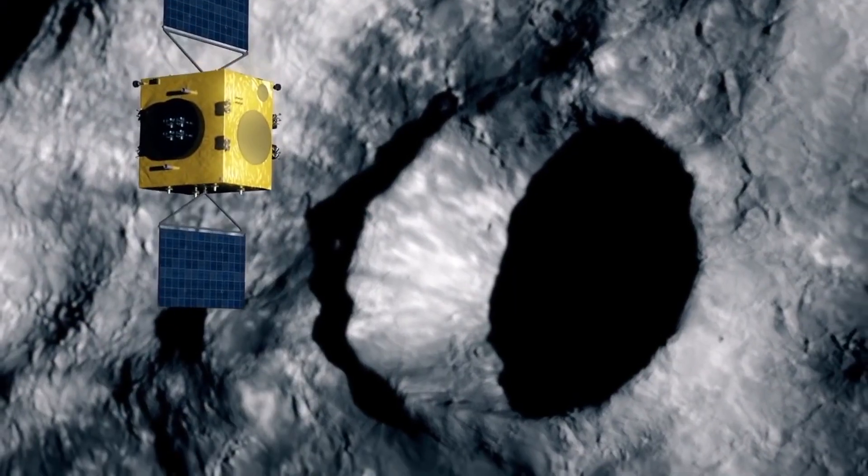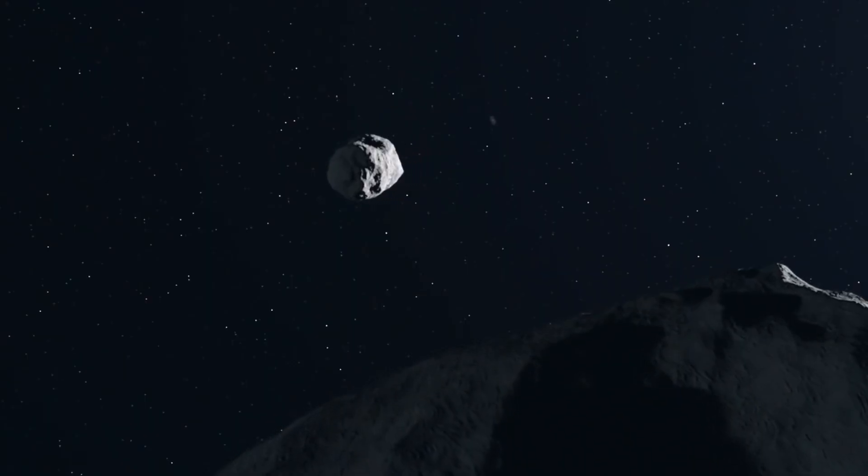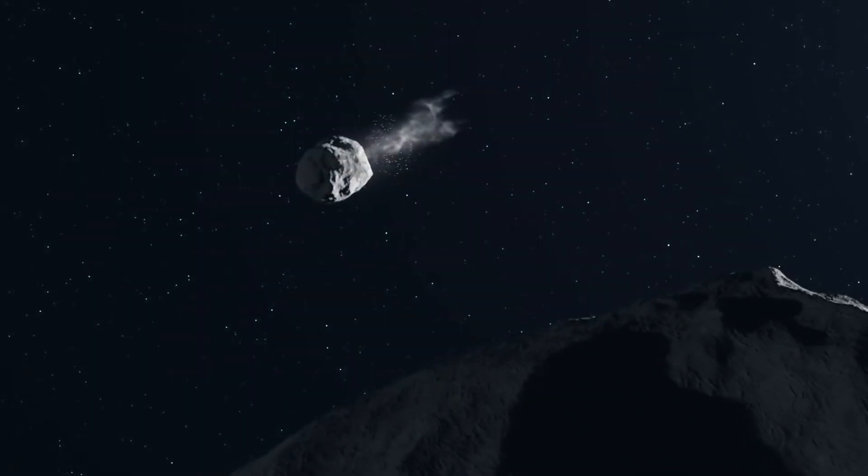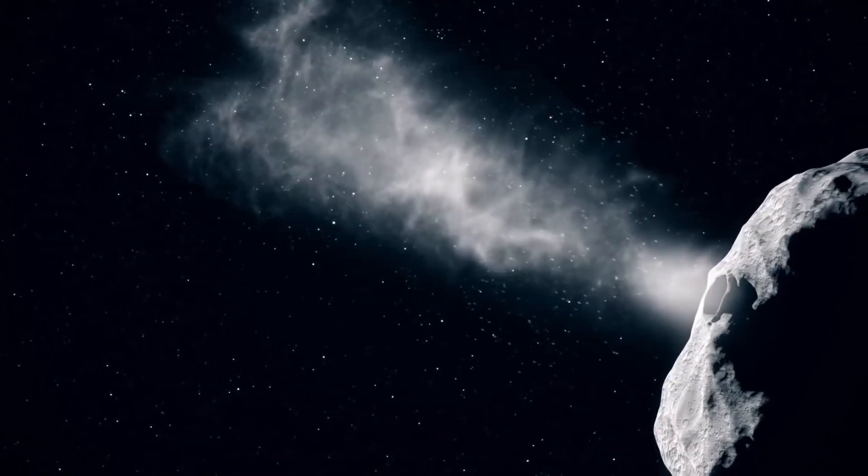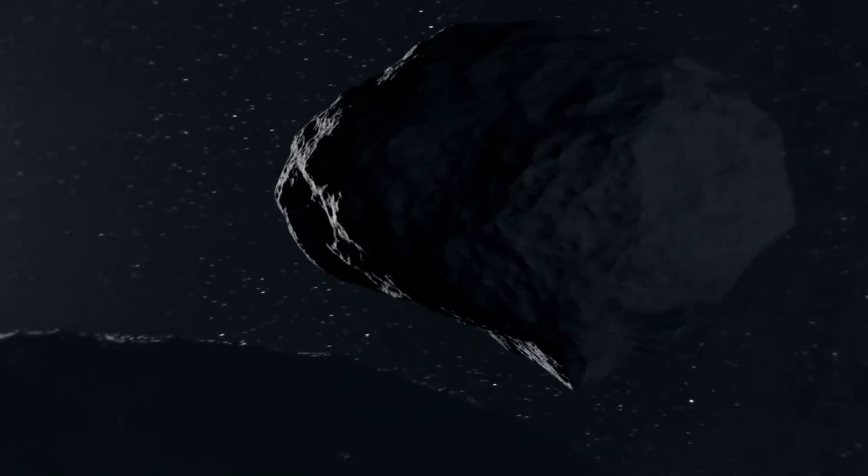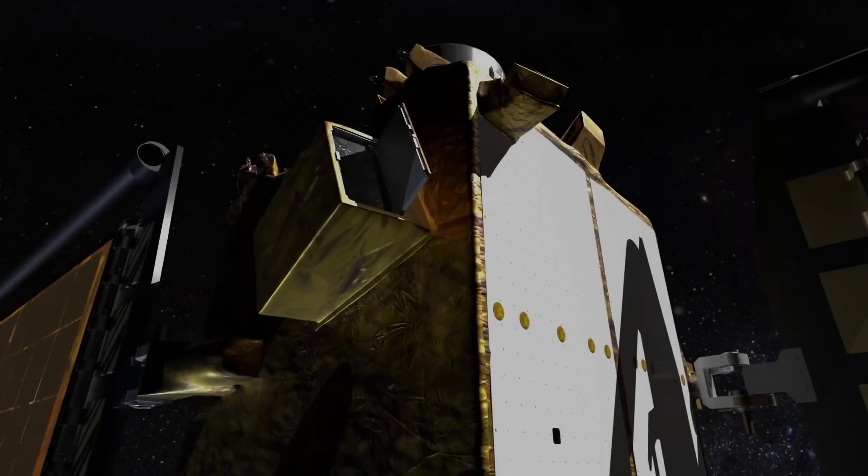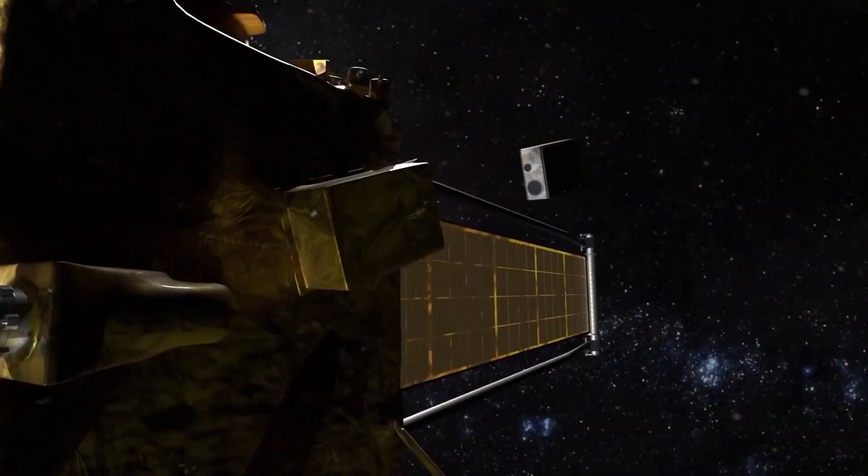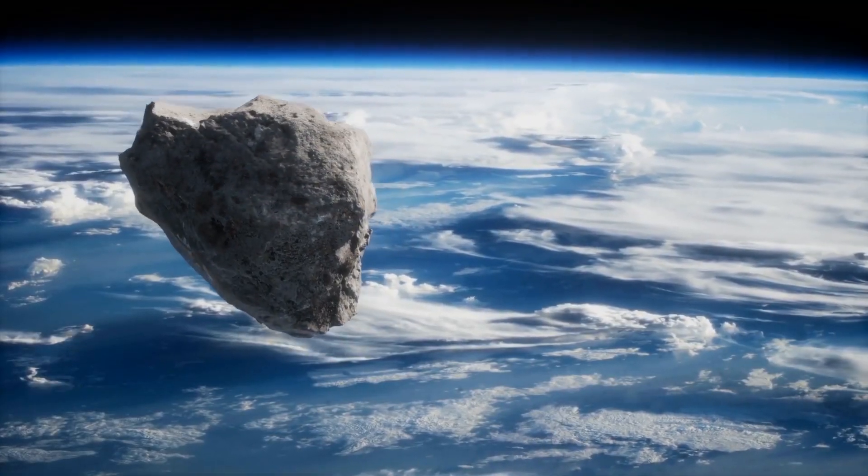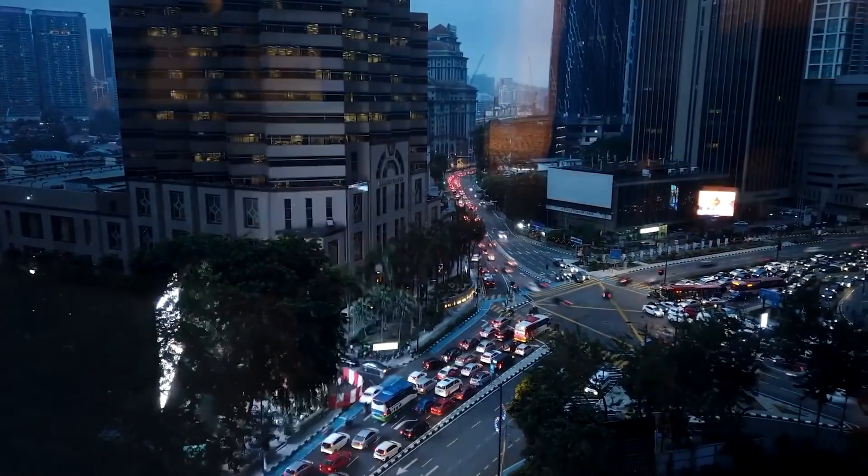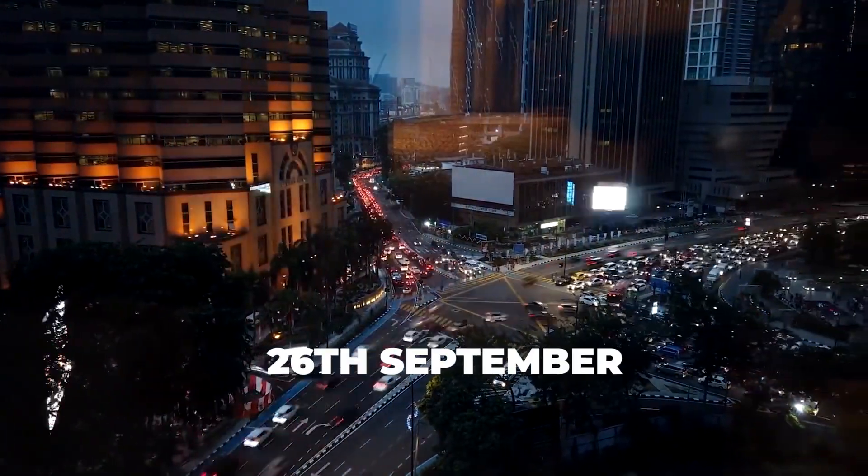Once there, the goal is to smash the craft into the moon to see if there's any influence on its trajectory. If the craft can change the trajectory of the moon, it will show that this type of system can be used in the event of the Earth coming into the path of a large asteroid. Impact date is currently scheduled for the 26th of September.